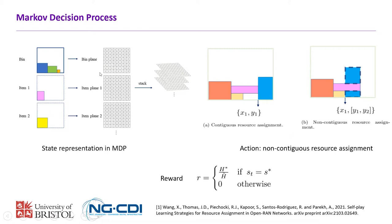To solve this using reinforcement learning, we first model the problem as a Markov decision process. The MDP has a state representation, action, and reward. Because our bin packing problem is 2D, we have one 2D matrix modeling the bin and multiple matrices modeling the items — a 3D representation. The action is the position to place each item inside the bin, and the reward is an indicator of the performance of the final bin packing solution.